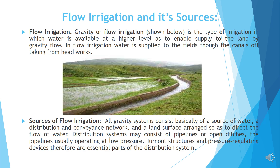Sources of flow irrigation. All gravity systems consist basically of a source of water, a distribution and conveyance network, and a land surface arranged so as to direct the flow of water. Distribution systems may consist of pipelines or open ditches. The pipelines usually operate at low pressure.